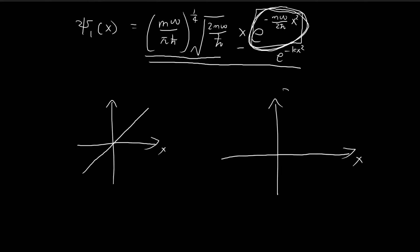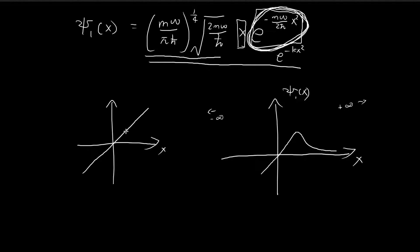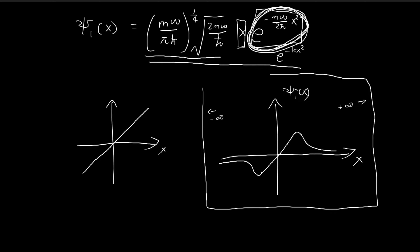But as x gets bigger and bigger, tending toward infinity, this e to the power of negative kx squared term starts becoming significant, and it tends toward zero. So the net effect on the graph is that it pushes the original x function toward zero. Without this term it would stretch all the way to infinity, but now it pushes the graph down as this term starts to dominate. The same goes for the other side — it starts veering downward and turns closer and closer toward zero. This is what the first stationary state approximately looks like.